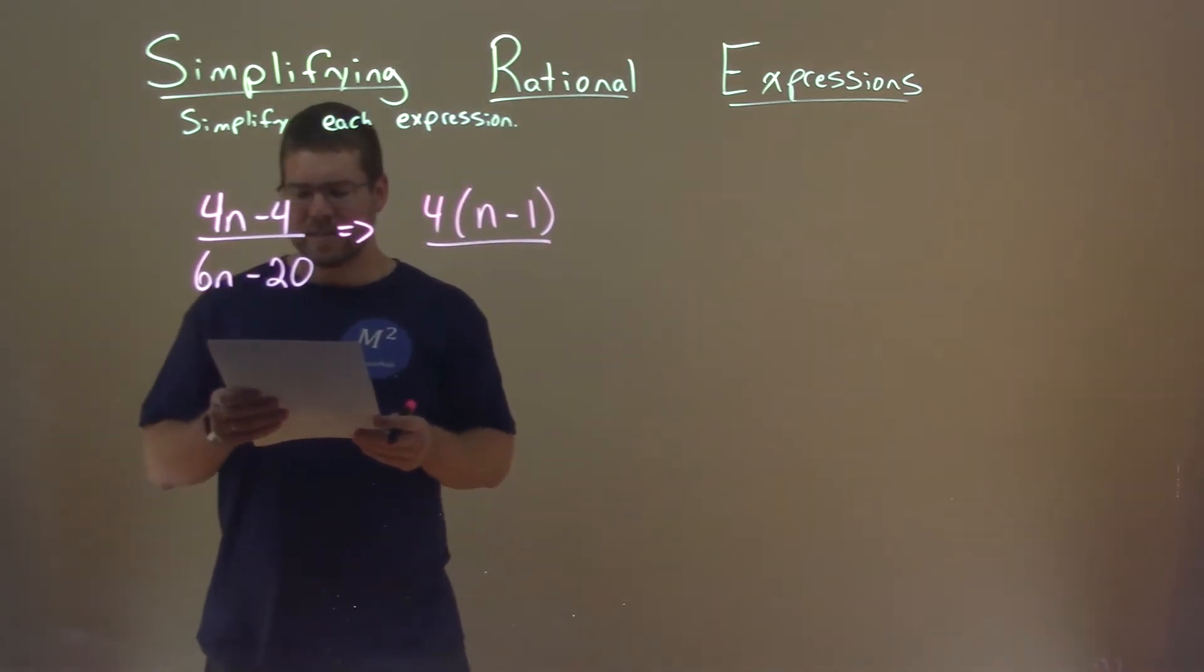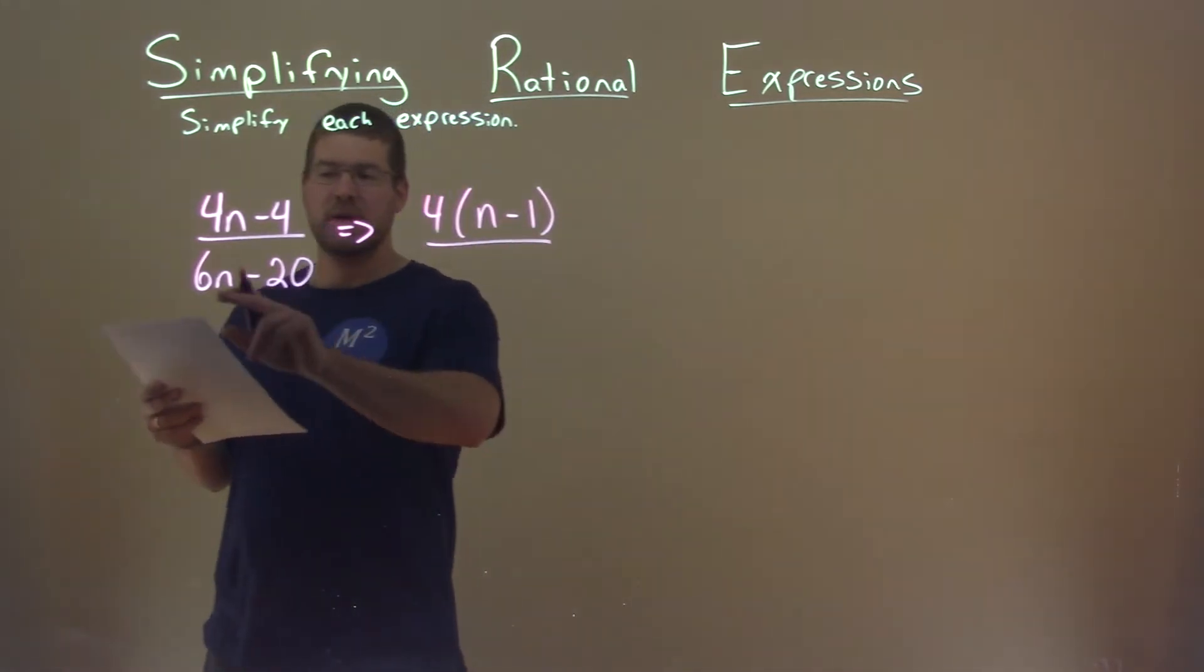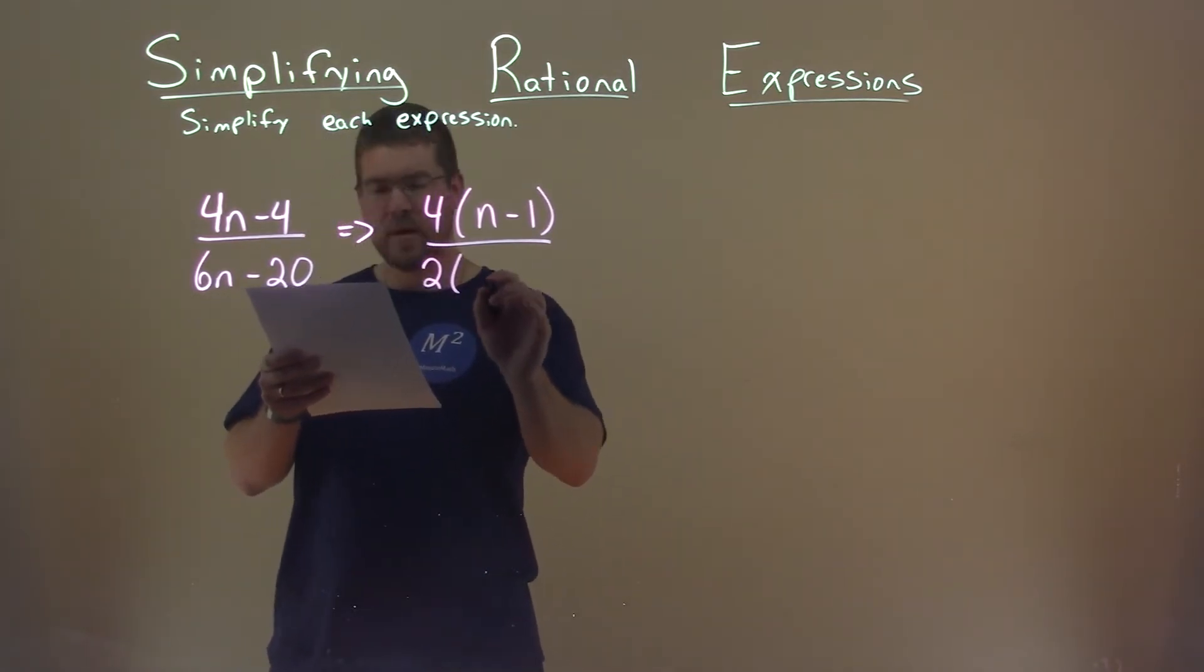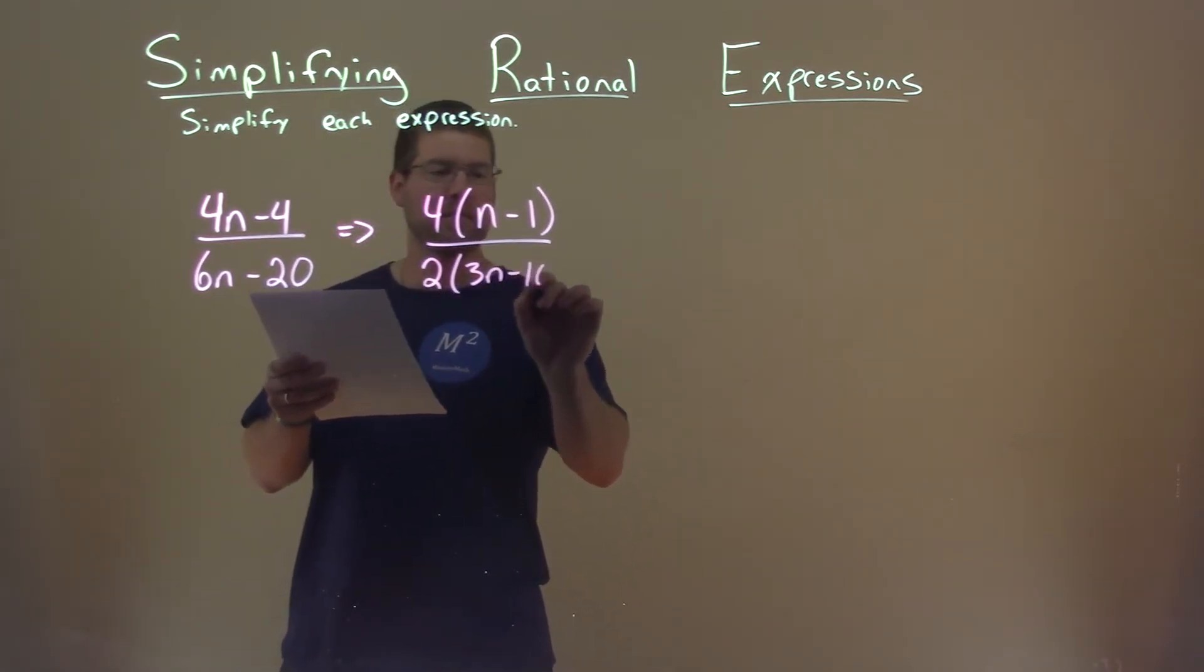Denominator, I can see that there's a 2 in 6n and 20. So if I pull a 2 out, I'm left with 3n minus 10 here.